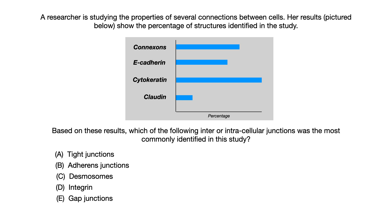Based on that information, we have to figure out what type of junction was most commonly identified. So needless to say, between connexins, E-cadherin, cytokeratin, and claudin, one of those will be paired up with one of our answer choices. The first part of getting this question right is being able to read data, and this is not an uncommon way for USMLE or Comlex to ask you a question. In this question, you need to look at this graph and figure out that cytokeratin — which I've highlighted in red — was the structure most commonly identified in the study.